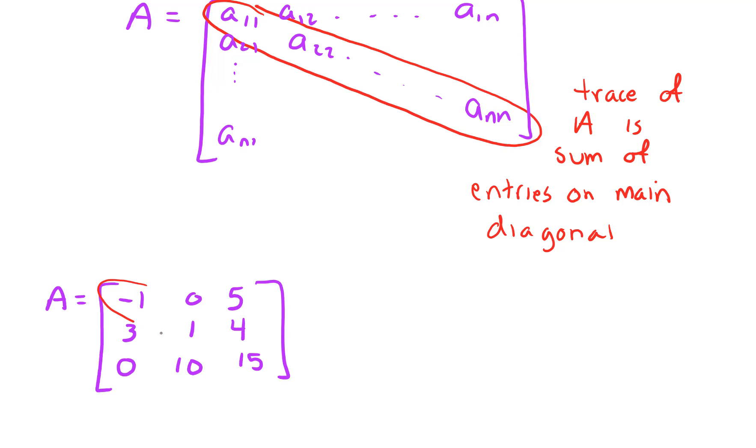So if we wanted to find the trace of A, again, we're looking at the sum of entries on the diagonal. So we would say the trace of A is equal to negative 1 plus 1 plus 15. So the trace in this case is just 15.